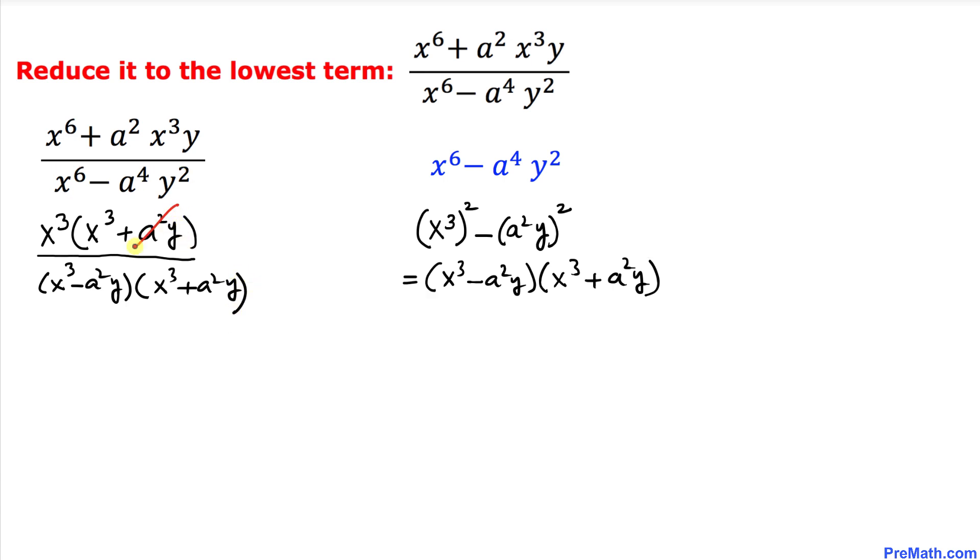Now we can see that this factor on the numerator and this factor on the denominator cancel each other out, and we simply end up with x^3 divided by (x^3 minus a^2 y). That is our reduced answer.